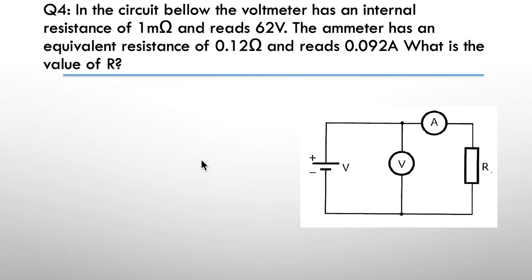Question 4: The voltmeter has an internal resistance of 1 milliohm and reads 62 volts. The ammeter has an equivalent resistance of 0.12 ohms and reads 0.092 amps.